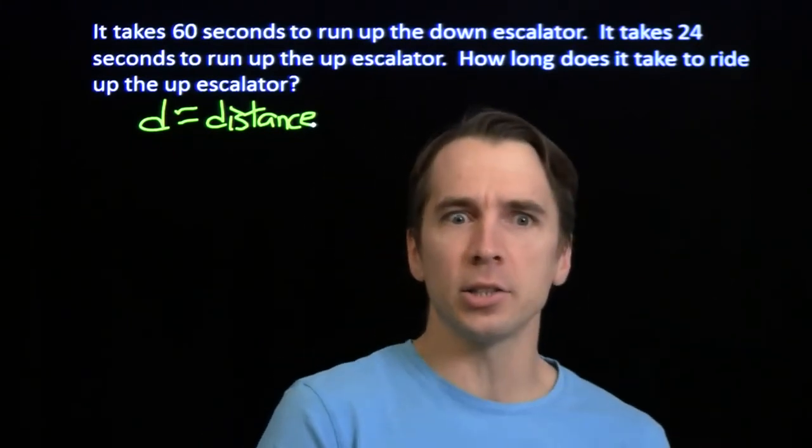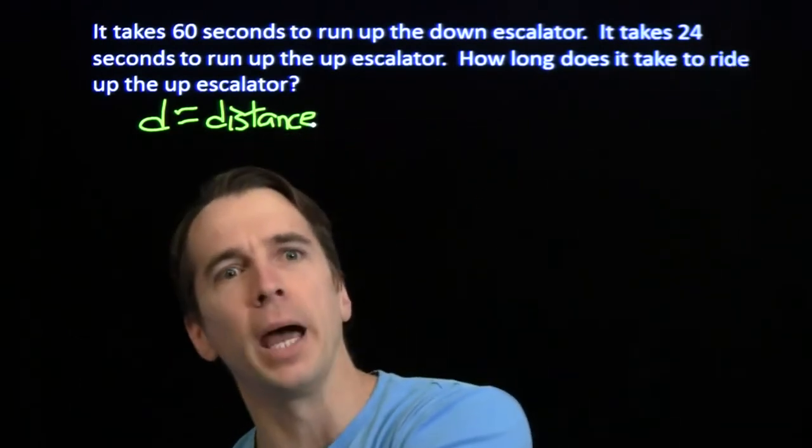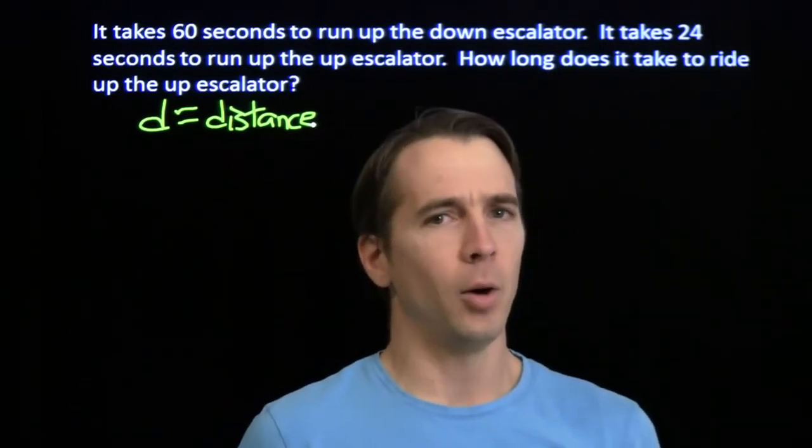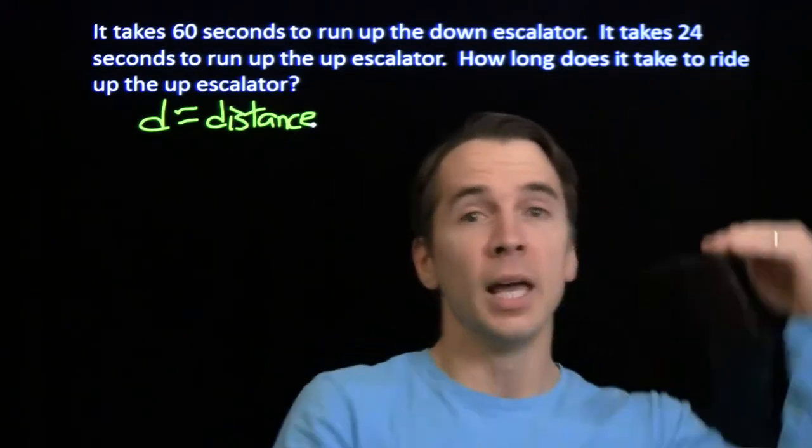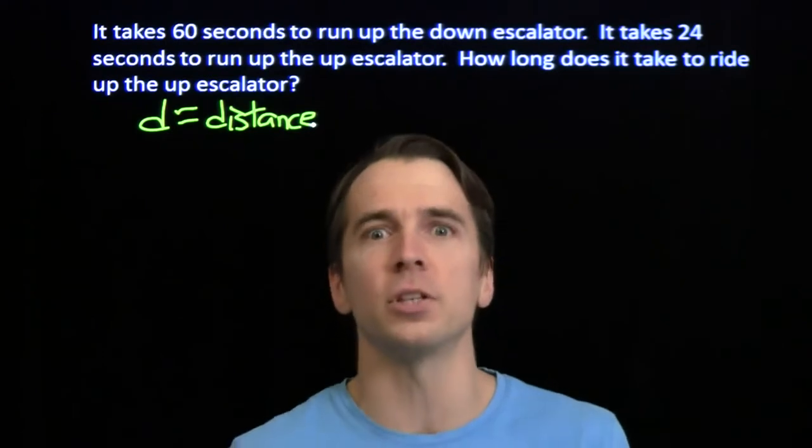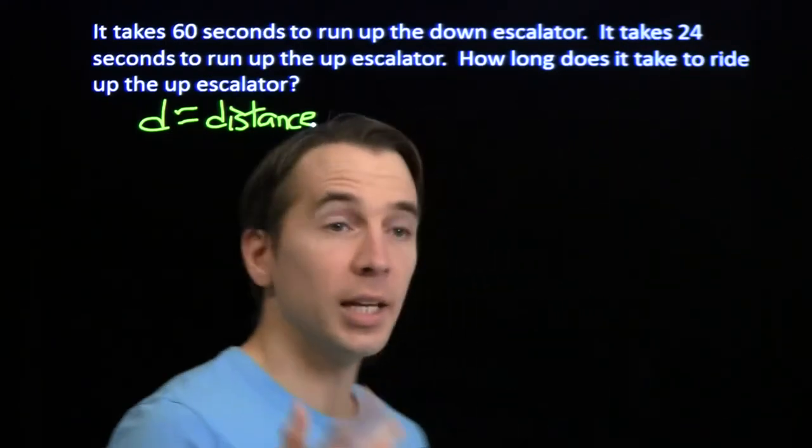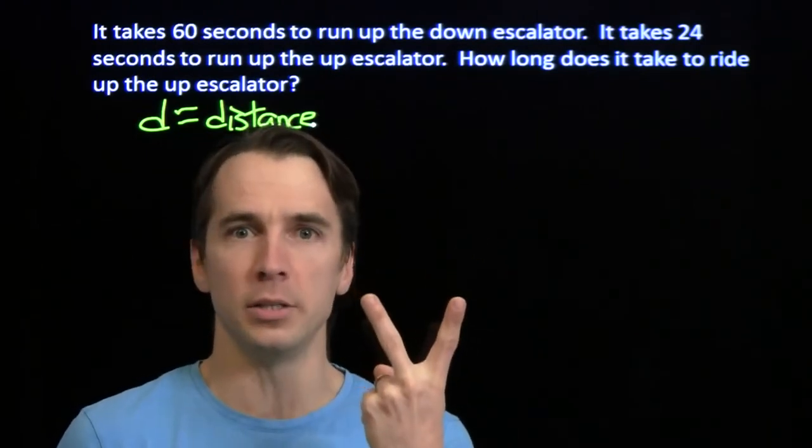And when you're running up the down escalator, there's two things going on. There's you running, and there's the escalator pushing back against you. It's not helping you then, but still we've got two things going on. There's you running, escalator going down, and the resulting speed is the difference of these. You running minus the speed that the escalator is taking away. So we need two more variables for our speeds.